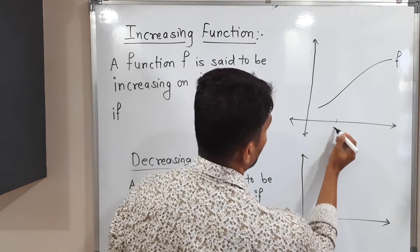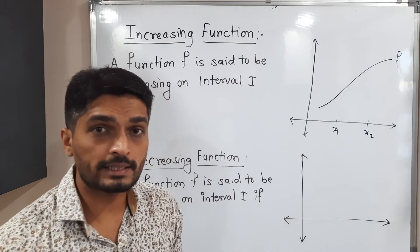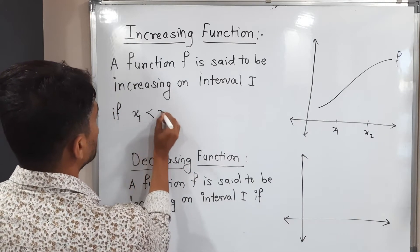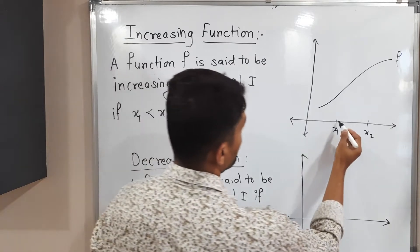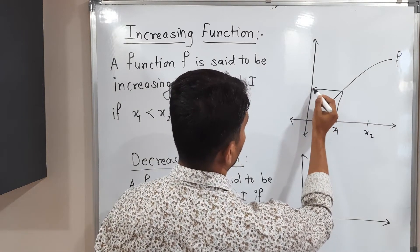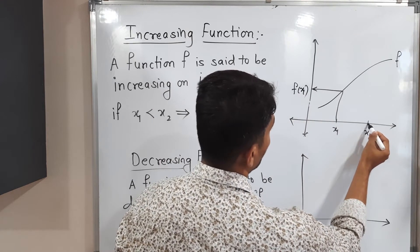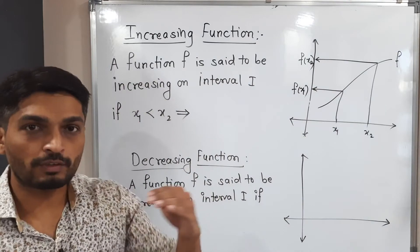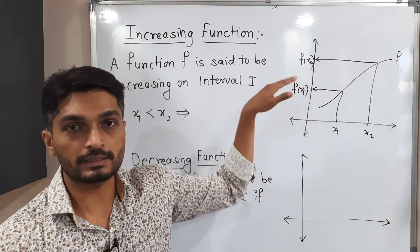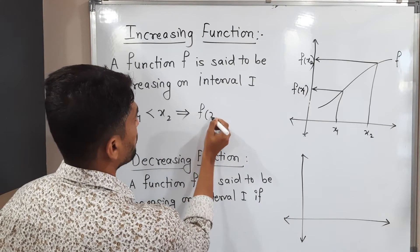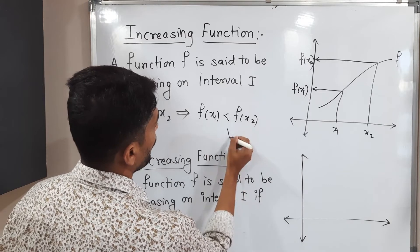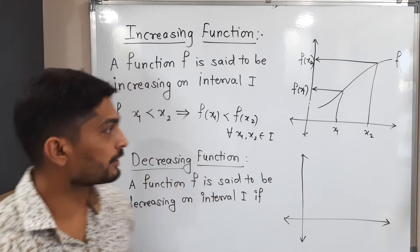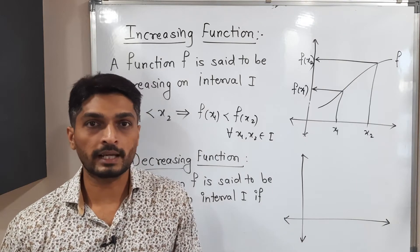Let us take two points: first point x1, second point x2. Since x1 lies on the left-hand side of x2, we can say x1 is less than x2. If x1 is here, f of x1 will be somewhere here, and the image of x2 will be f of x2. Since f of x1 is below f of x2, we get f(x1) < f(x2) for all x1, x2 belonging to interval I. So this is the definition of increasing function: if x1 < x2, then f(x1) < f(x2).